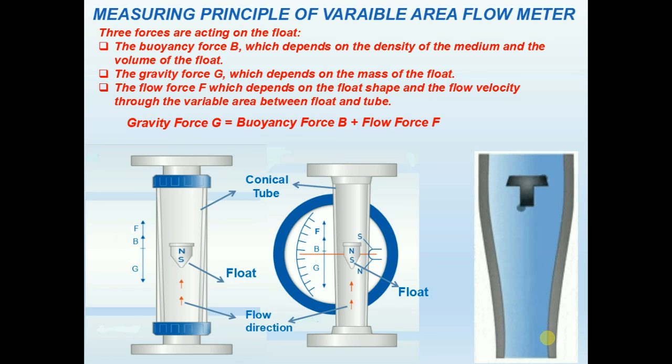Every flow rate corresponds to a defined variable area resulting from the conical shape of the measuring tube and the specific position of the float.